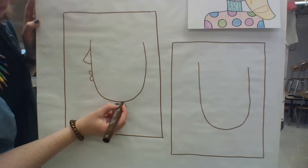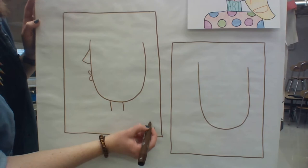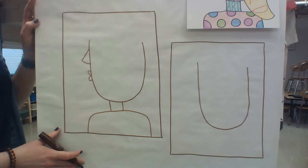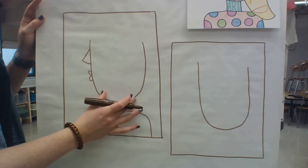I'm going to do a very simple neck—two very short lines—and then bringing a line up over, around and down for your shoulders.